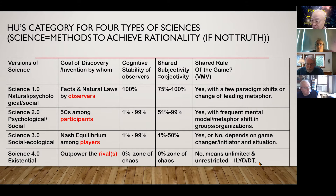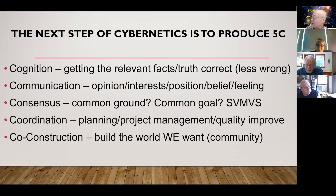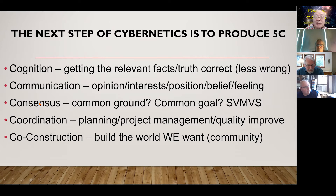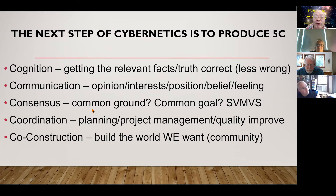The role here is rivals, and the question is life or death — I mean, you leave, I die, or we die together. That is my main course for today's lunch. For dessert: the next step of cybernetics is to produce better 5C. Cognition — can we do better cognition and get relevant effects and truth, or at least be less wrong? Can we improve our communication? That's why I developed this thing called communication, where opinions, interests, positions, beliefs, and feelings can be exchanged smoothly.